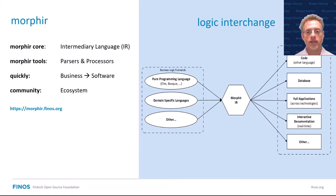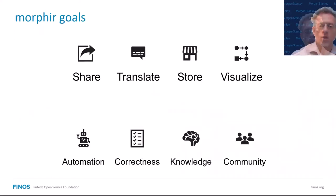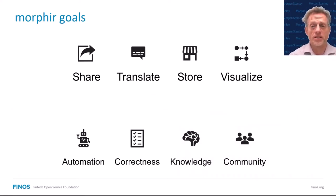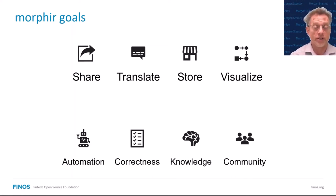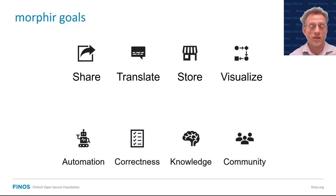On top of that, we can do things like generate documentation, generate lineage, and all these other things that the enterprise asks us to do. The Morpher project has a number of goals. The primary goal is to make business logic a first-class asset — something that's protected and stored separately from the rest of the application. Once it's in that format, we can share it, which is important if we want to run in different contexts, or maybe we want the same logic to run across different teams or even different firms when we're talking about something like regulations.